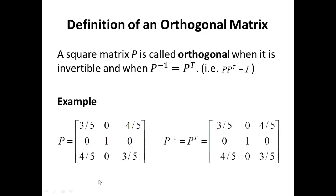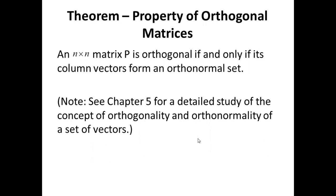For example, if I ask you to verify that a given matrix is orthogonal, all you have to do is multiply that matrix times its transpose. And if it gives you the identity matrix, then you can conclude that P inverse equals P transpose, and therefore P is orthogonal. A property of orthogonal matrices — theorem: